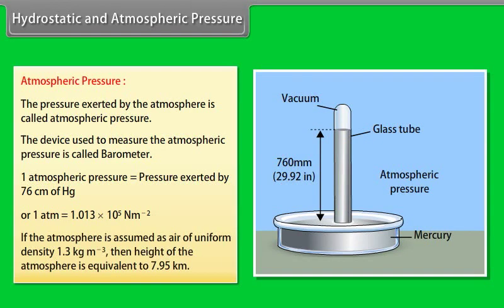If the atmosphere is assumed to be air of uniform density 1.3 kg/m³, then the height of the atmosphere is equivalent to approximately 7.95 km.